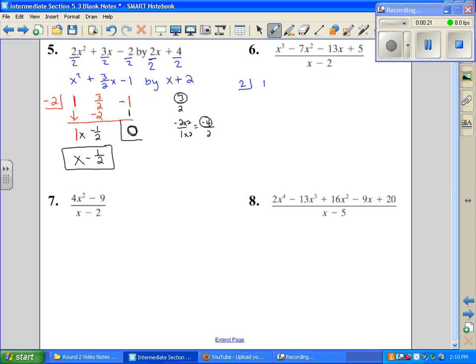And then we want to drop coefficients, so one, negative seven, negative thirteen, and five. We start by dropping the first, multiply, two times one is two, and now we add down, negative seven plus two is negative five.